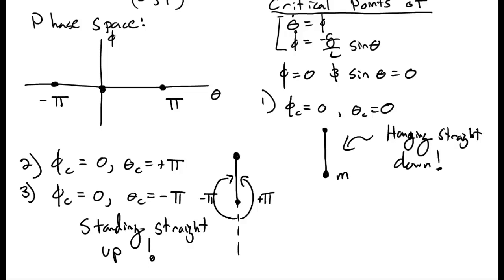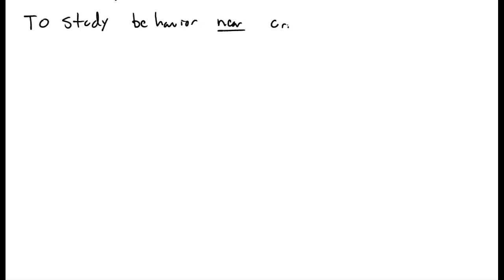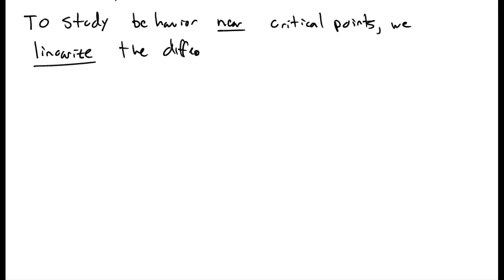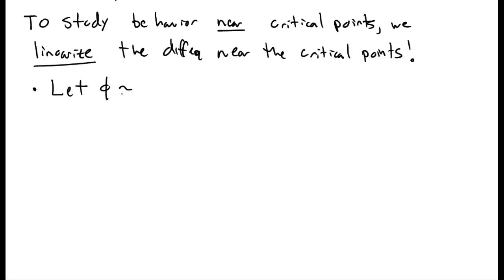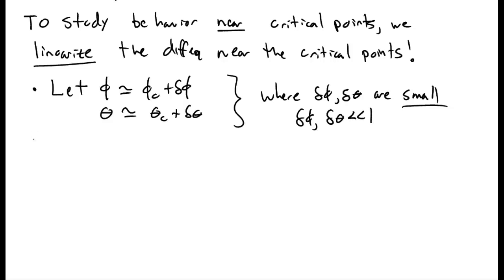How do we study the behavior of phase space around these critical points? Near a critical point, we linearize our differential equations around the critical points and then study them there. What we mean is: we let our solution phi be approximately the critical point value plus some small extra bit, delta-phi or delta-theta, where delta-phi and delta-theta are small — much less than one.